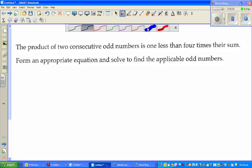Okay, let us look at this question which is an example on numbers. The product of two consecutive odd numbers is one less than four times their sum. So this is a huge sentence; there are many information here.